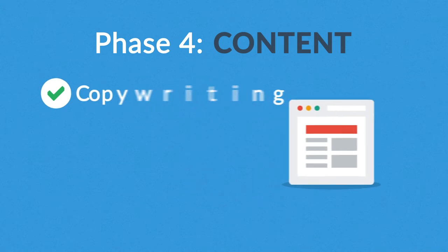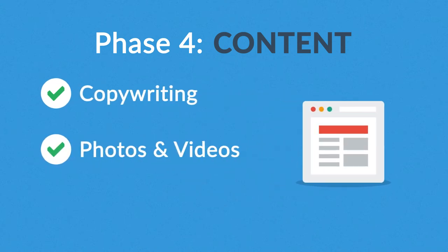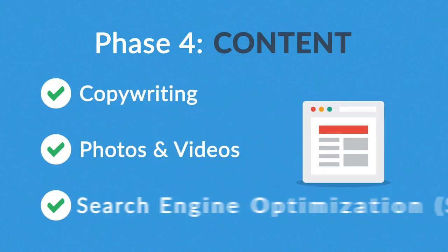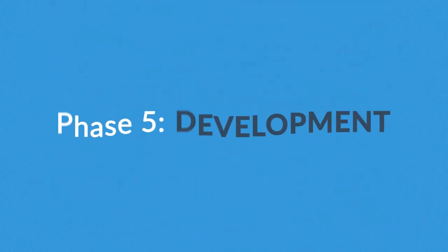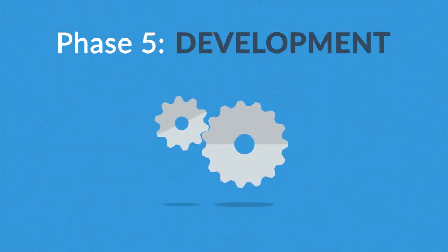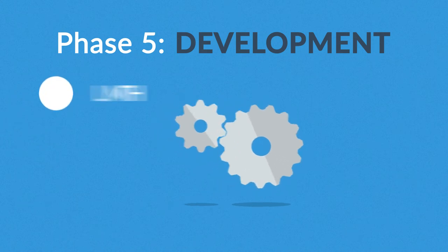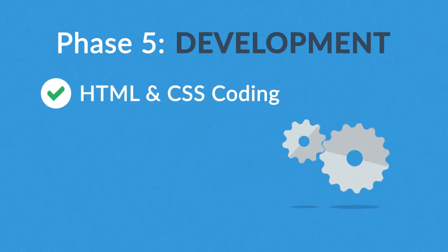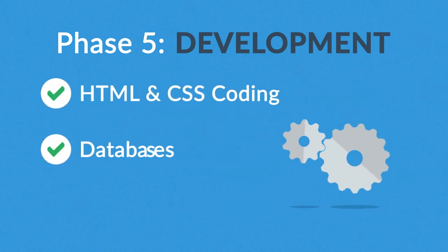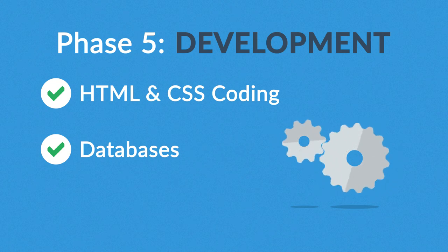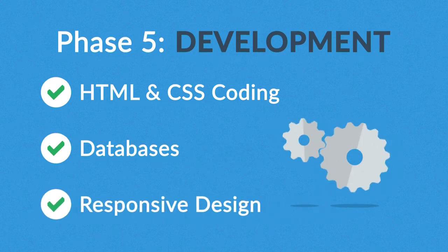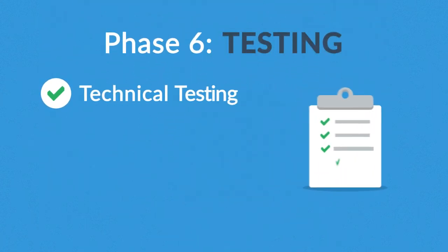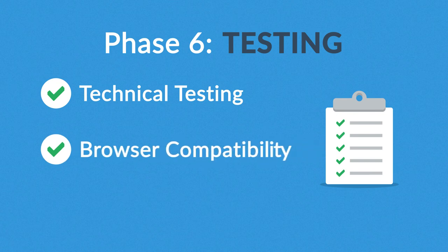Phase four: Content. A very important part of the process is choosing the right text, photos, or videos — all optimized not only for your visitors but also for search engines. Phase five: Development. Here we actually create the website using HTML (HyperText Markup Language) and CSS (Cascading Style Sheets), with help from databases and other technologies as needed. Our websites can also be made accessible to mobile devices.